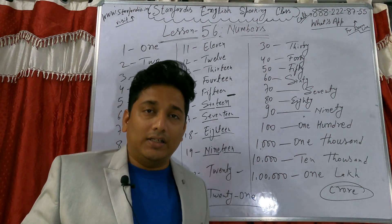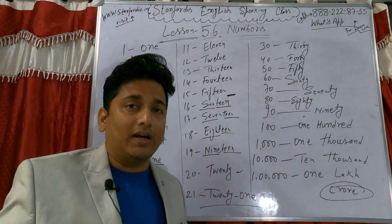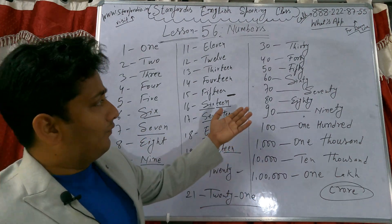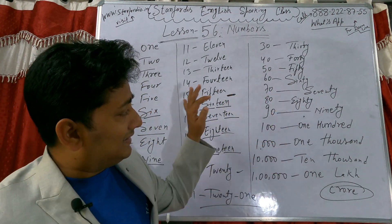Thirty-two, thirty-three, thirty-four, thirty-five, then forty, fifty, sixty, eighty, ninety.